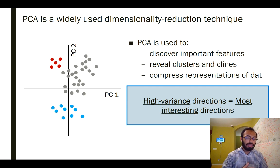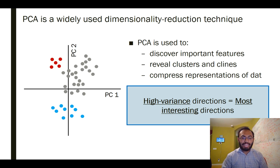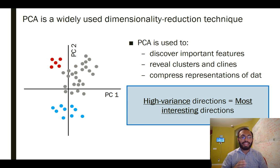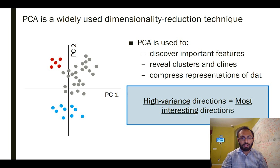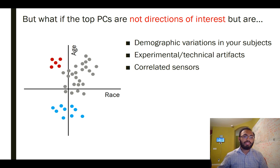There's a certain limitation, or at least assumption of PCA, and that is that the directions that are of interest to the analyst are those that have the highest variance within the data. That's how PCA works — it efficiently finds those directions that have the most variation and projects the data onto those directions, which we call principal components, or PCs. But what if the top PCs are not directions of interest?